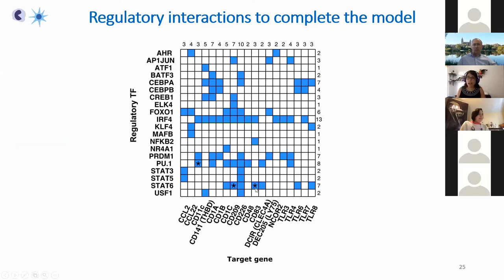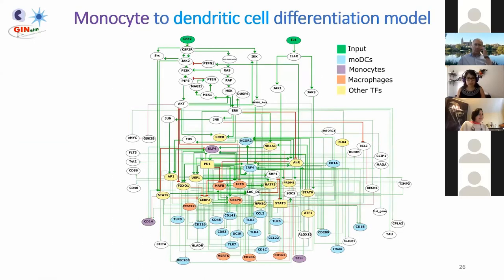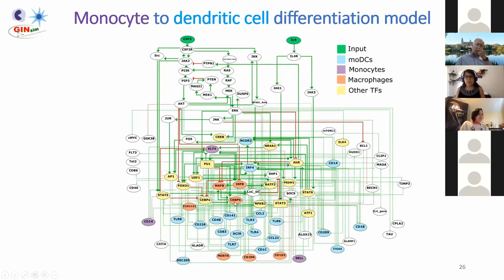Here are our results: target genes we wanted to add to the model and the regulatory transcription factors. In blue, we marked interactions we were able to discover, and with asterisks those that have been previously validated. We added these new interactions to the model. Now our new version includes many more nodes for monocyte-derived dendritic cell markers in light blue, markers for monocytes like CD14, and for macrophages many other genes beyond MRC1 now like CD163. The transcription factors are now connected, regulating downstream genes — which was the critical missing piece.